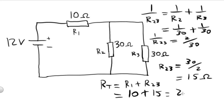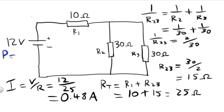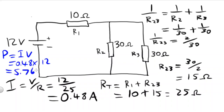We can now calculate the total current for the circuit. I equals V over R — the voltage is 12, the resistance is 25, so the current will equal 0.48 amps. The power for the circuit: P will equal IV, I equals 0.48, times 12 volts, which equals 5.76 watts.